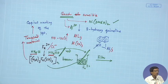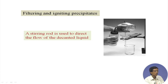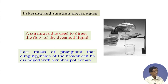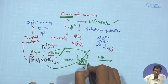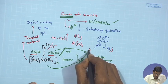When you transfer using the water jet, you are simultaneously washing the precipitate. The washing liquid passing through the precipitate goes into the beaker as filtrate, while the residue remains on the filter paper. The last trace of precipitate adhering to the beaker must be carefully removed.